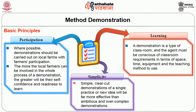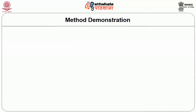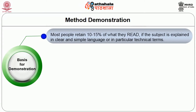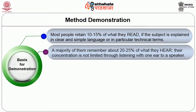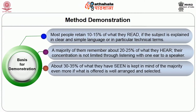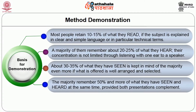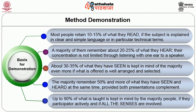Learning is another basis. A demonstration is a type of classroom and the agent must be conscious of classroom requirements in terms of space, time, equipment and teaching method. Most people retain 10 to 15 percent of what they read. A majority remember about 20 to 25 percent of what they hear. About 30 to 35 percent of what they have seen is kept in mind if well arranged and selected. The majority remember 50 percent and more of what they have seen and heard at the same time, provided both presentations complement each other. About 90 percent of what is taught is kept in mind by the majority if they participate actively and all the senses are involved. Only the demonstration can make teaching perfect.